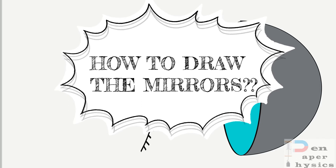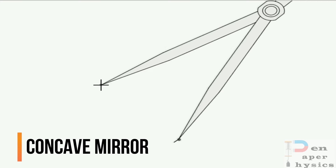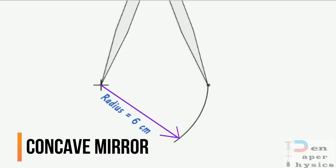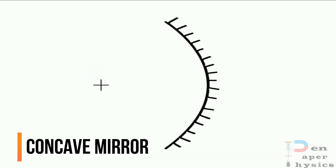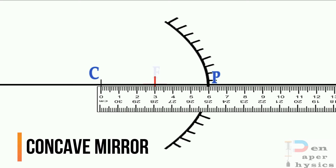Now, how will we draw these spherical mirrors in an exam? It's up to you which measurement you want to take, but I will give you the measurement I always follow. We will take a radius of 6 centimeters and draw an arc. Next we mark the non-reflecting surface, and the center of the circle is marked as C. A straight line passes through C and intersects the mirror at point P. Since the radius is 6 cm, the distance between C and P is 6 cm, and exactly at the midpoint — 3 cm — we mark another point named F.